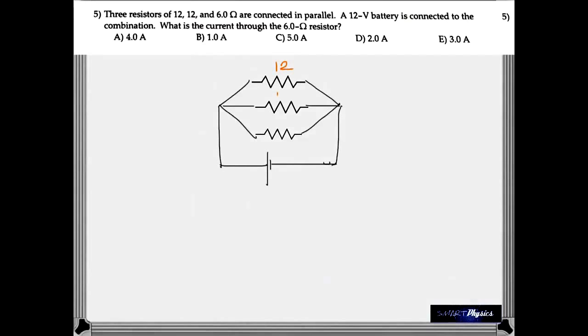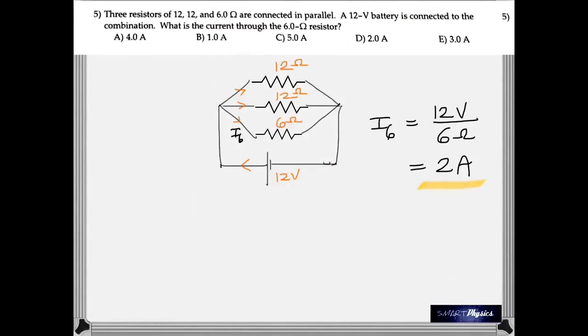Here, you have 12, two 12 ohms and 6 ohms connected in parallel. And a 12 volt battery is connected. What is the current through the 6 ohm resistor? The idea is to first find the total current. And for that, you have to find the equivalent resistance of these three first. And then divide that by the voltage. In fact, divide the voltage by that.